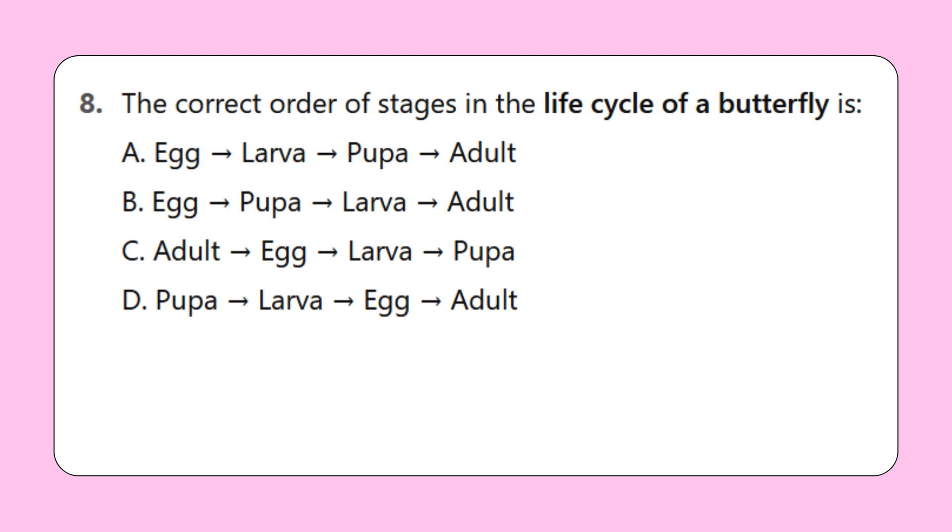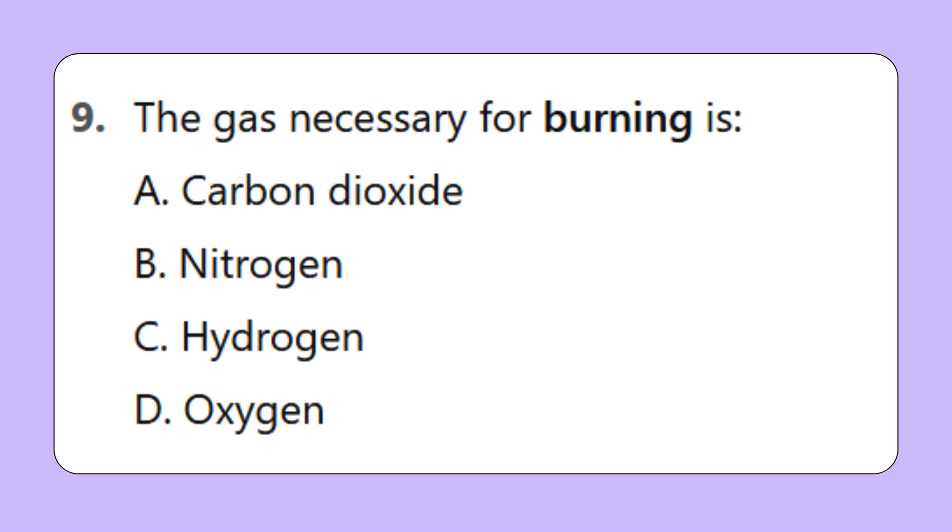Question 8: The correct order of stages in the life cycle of a butterfly is: A. Egg, larva, pupa, adult, B. Egg, pupa, larva, adult, C. Adult, egg, larva, pupa, D. Pupa, larva, egg, adult. Question 9: The gas necessary for burning is: A. Carbon dioxide, B. Nitrogen, C. Hydrogen, D. Oxygen.